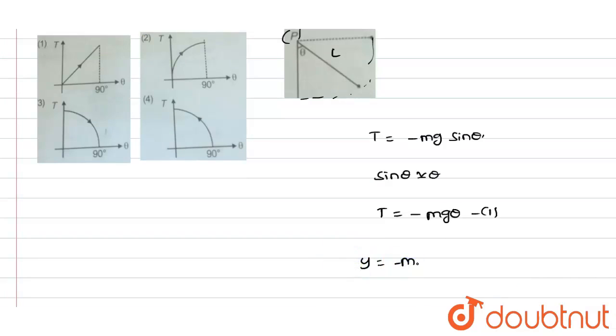y equals minus m into x. The plot, that means the graph between the tension versus the angle, will be towards the downside.